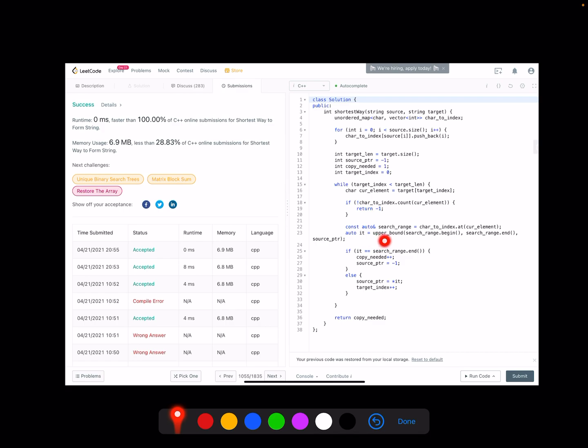Then we are going to do the binary search for the specific character. The search range is the vector which stores the specific character. Then if we cannot get any additional index for these values, we will need to reset the source pointer and increment the copy needed. Otherwise, we can increment our target pointer and also move our source pointer to the next index.